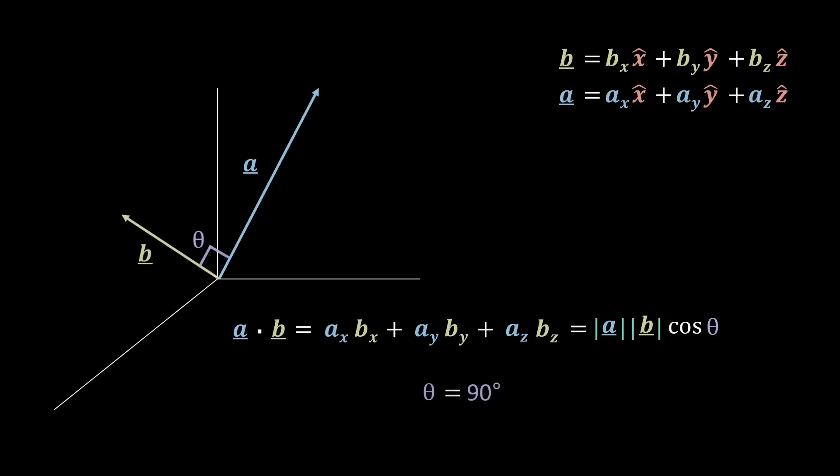For example, if the two vectors are at a right angle, as shown here, clearly cos 90 will be 0, and the dot product will end up being 0. Or, if the two vectors are parallel, then we see here that the dot product will just be the sum of the magnitudes, and clearly a vector dot product with itself will just be the magnitude squared.